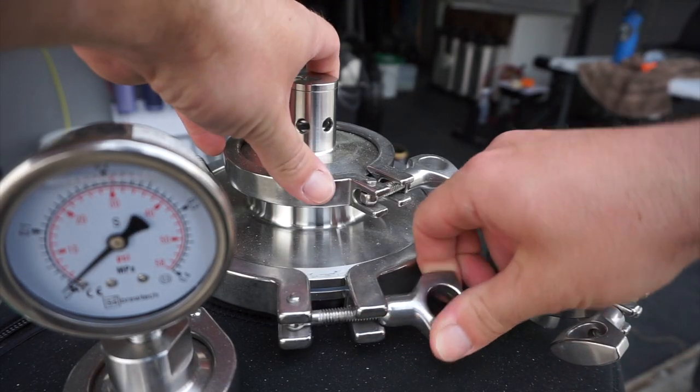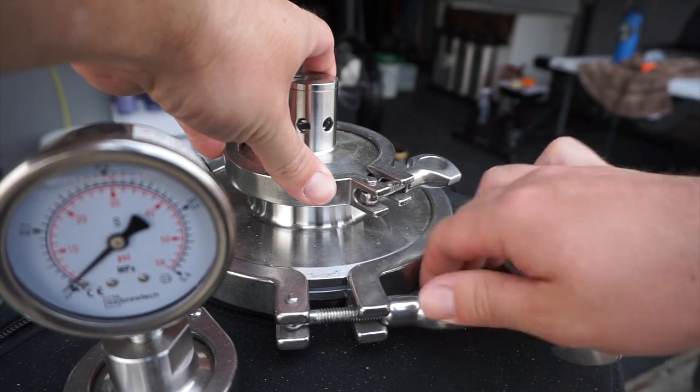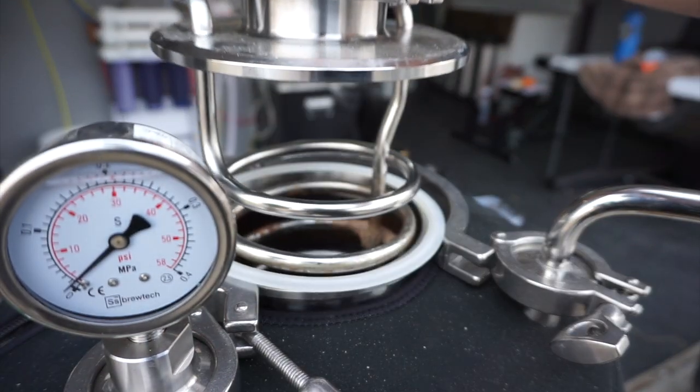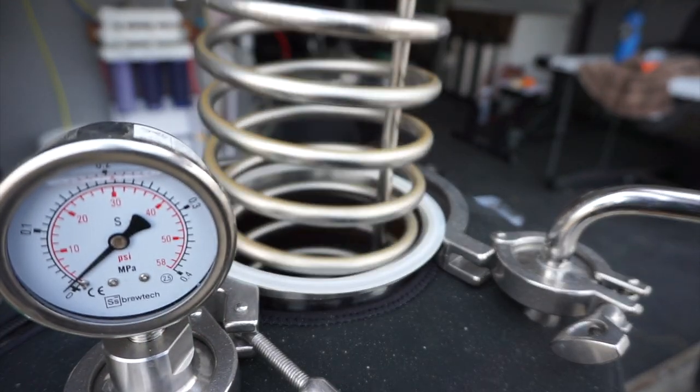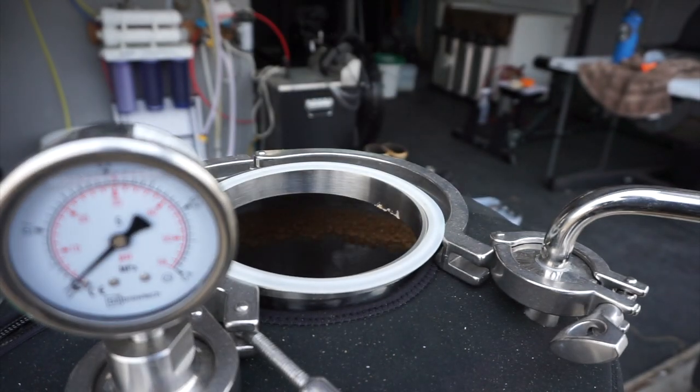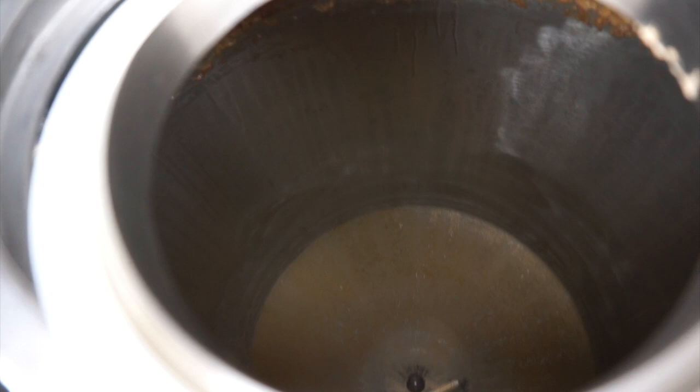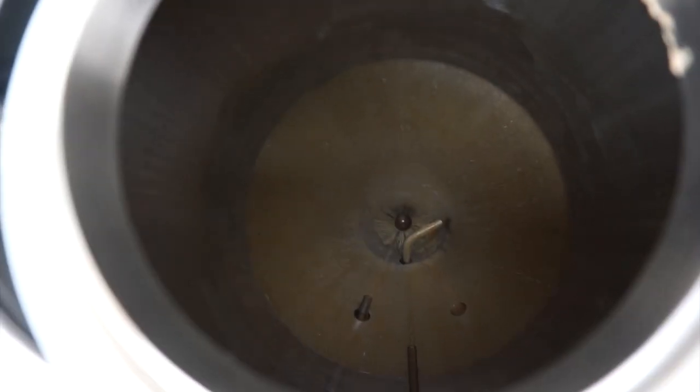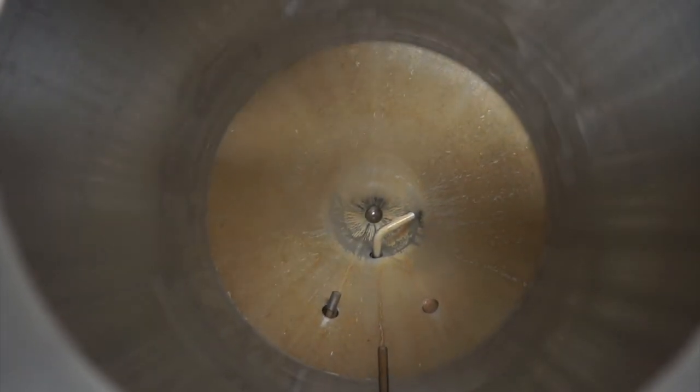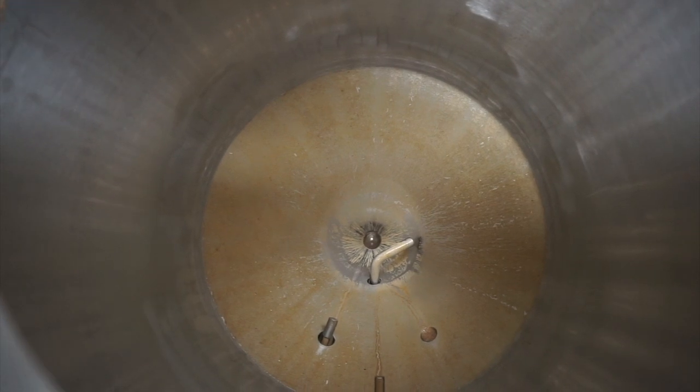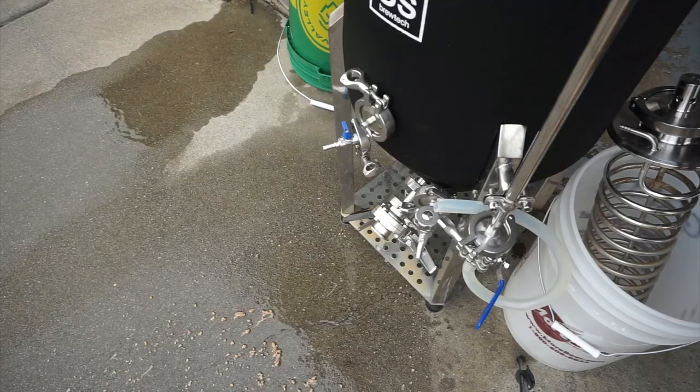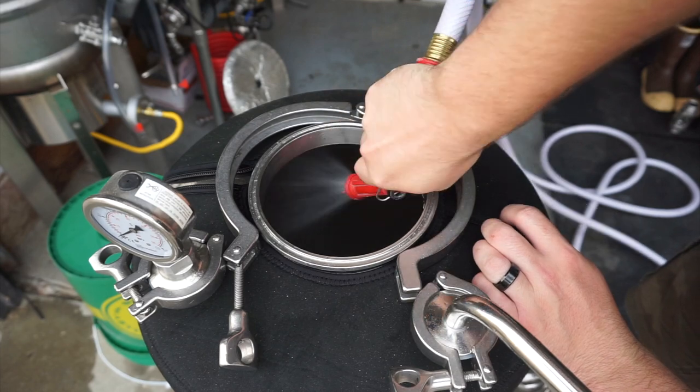Once you have depressurized the vessel, it's time to open it up and see what kind of mess we have in store. This was about 16 gallons of an American wheat beer, nothing too crazy, but it still leaves a huge mess as you can see here. So break out the hose, spray it down as best you can, and get it as clean as you can for the next step.